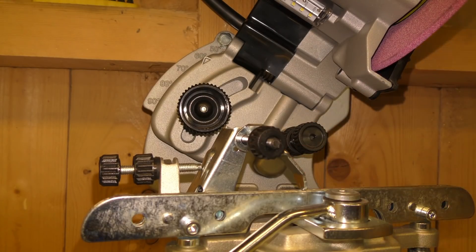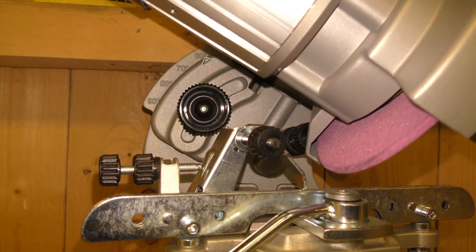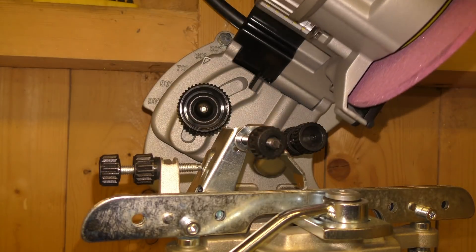With this knob, you set how deep the grinder wheel should go into the chain. The goal is to take away as little as possible from the chain.